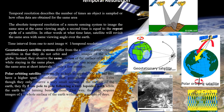Temporal resolution deals with time — the term 'temporal' indicates time, so temporal resolution is measured in terms of minutes, hours, days, weeks, or ten days. The absolute temporal resolution of a remote sensing system to image the same area at the same viewing angle a second time is equal to the repeat cycle of a satellite.